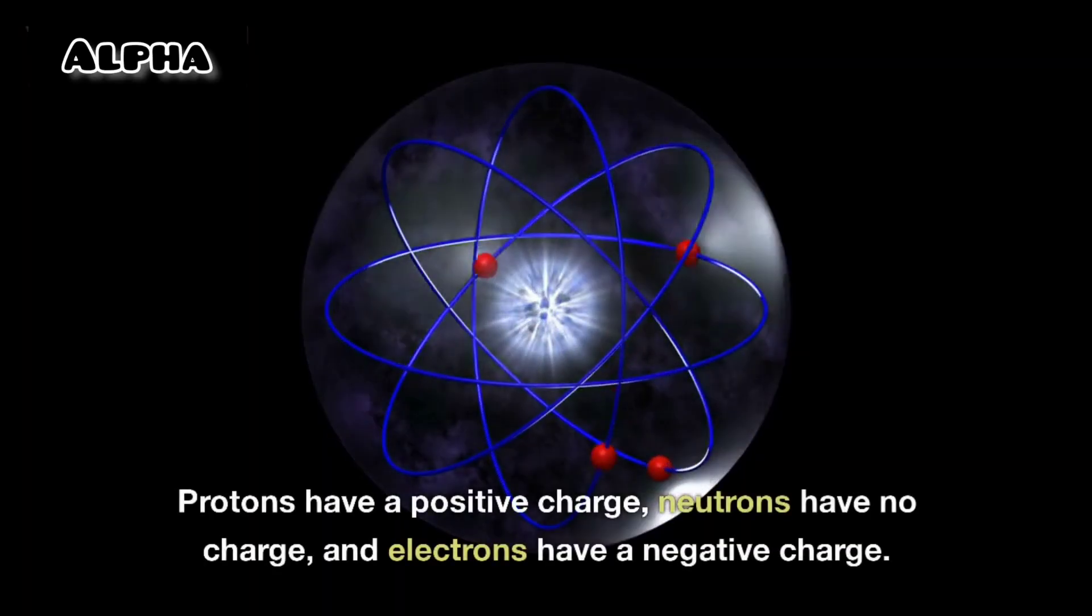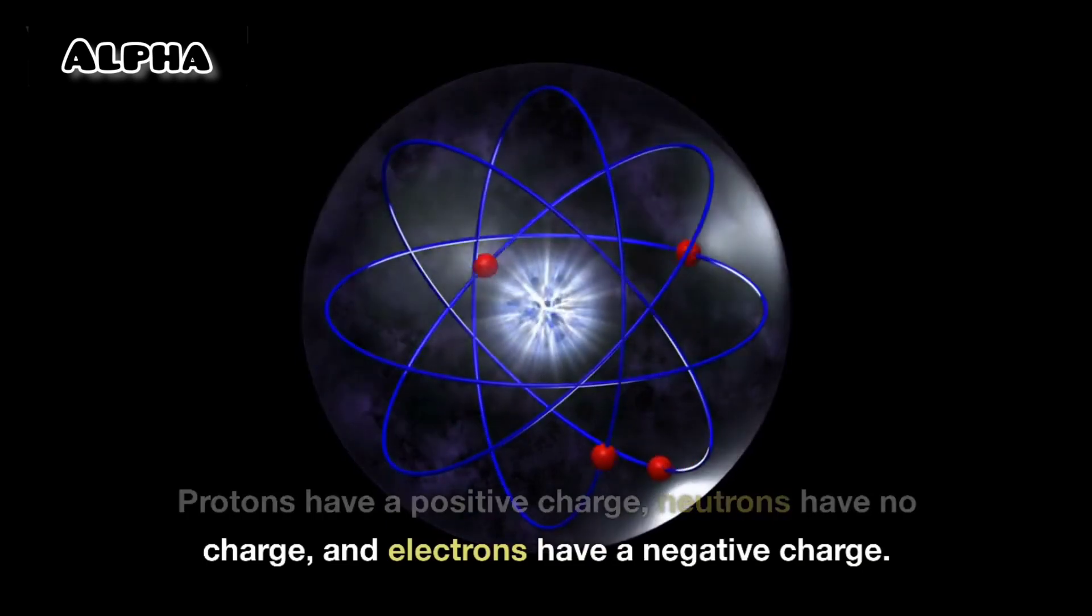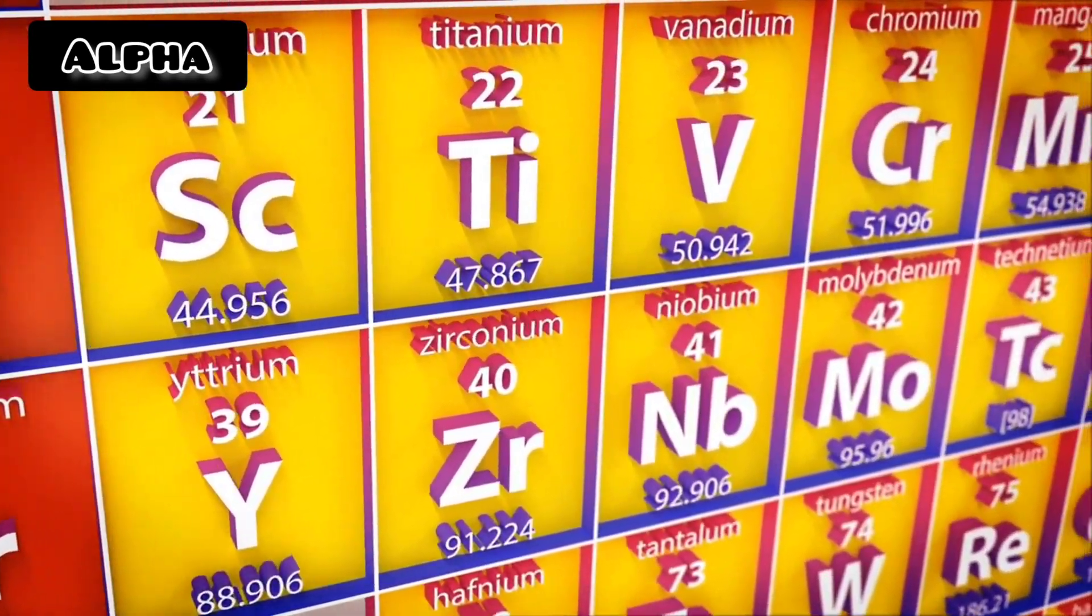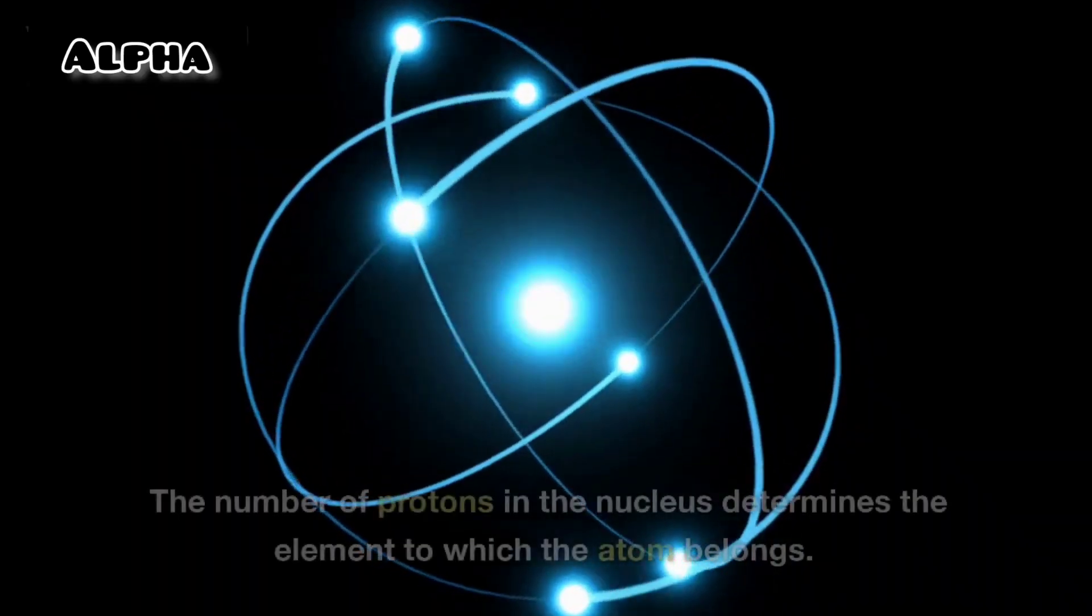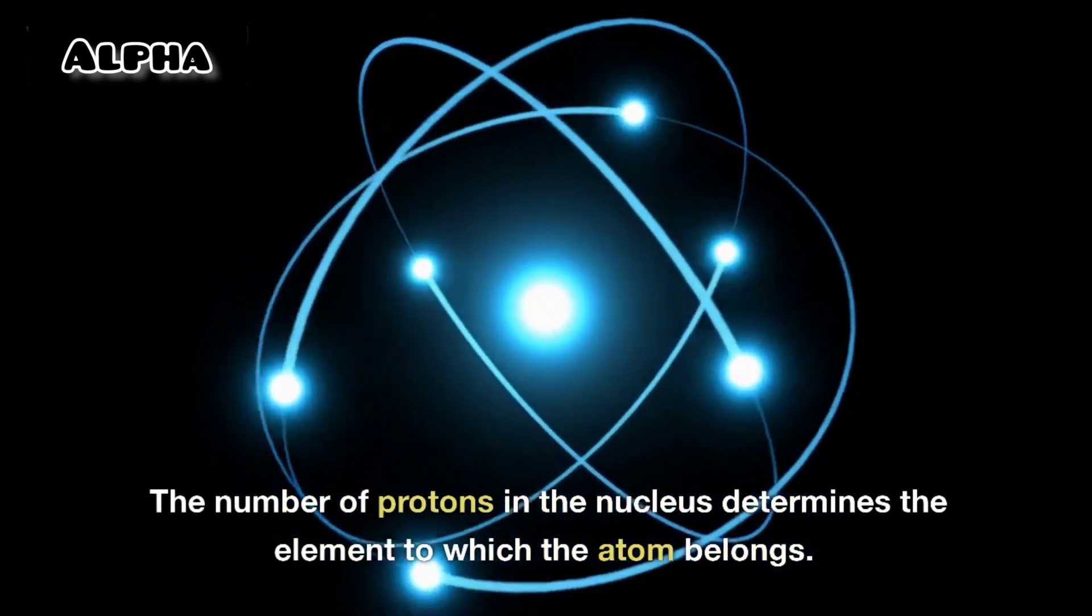Protons have a positive charge, neutrons have no charge, and electrons have a negative charge. The number of protons in the nucleus determines the element to which the atom belongs.